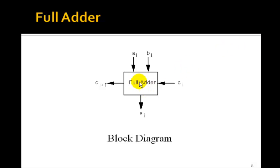Here's the block diagram for the full adder: AI, BI, CI in, SI and CI plus 1 out.